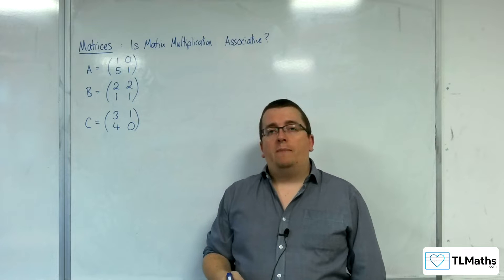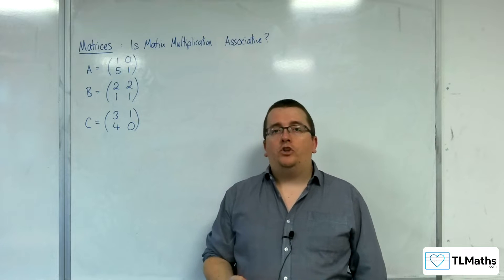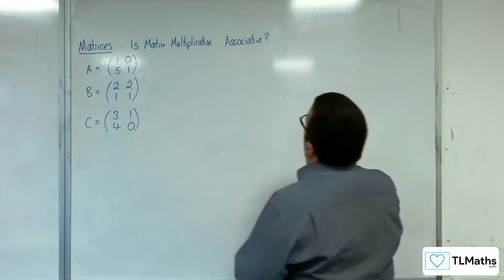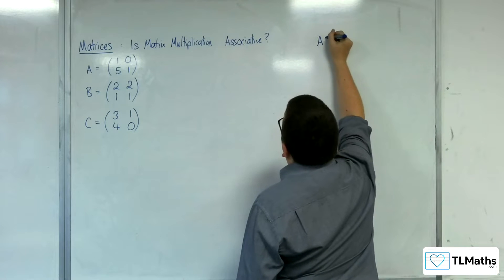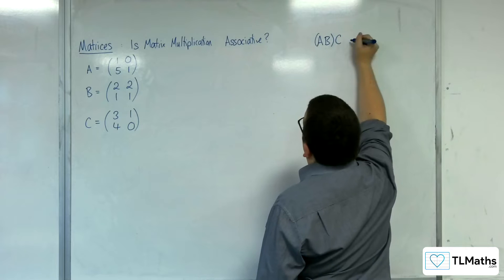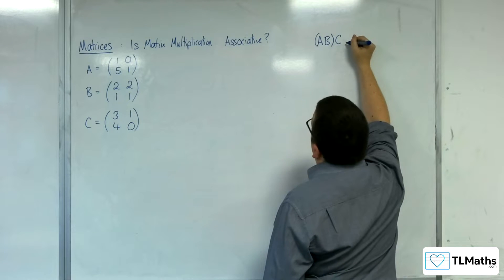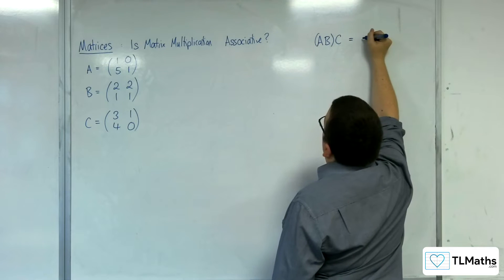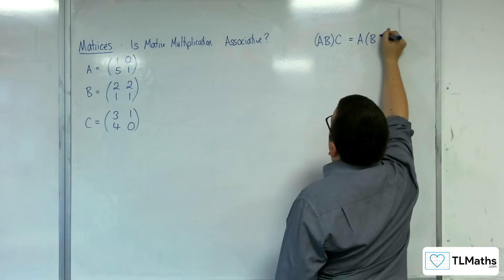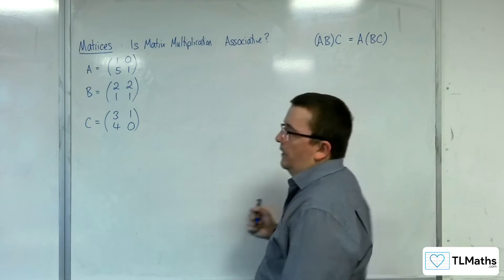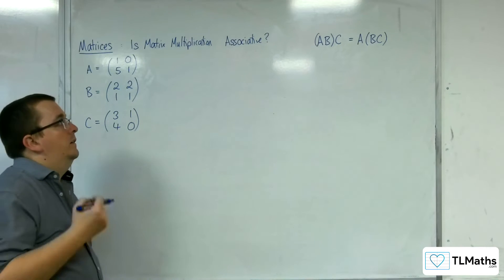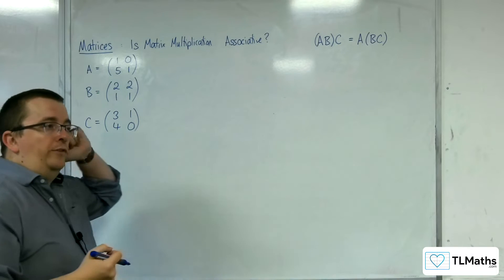So now we want to see if matrix multiplication is associative. What that would imply is that if I do A times B first and then multiply the result by C, I would get the same as if I did A times the result of B times C. If this is the case, then they are associative — matrix multiplication is associative.